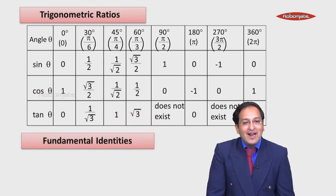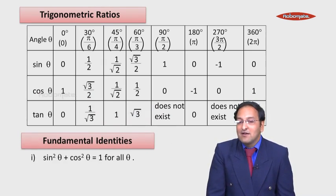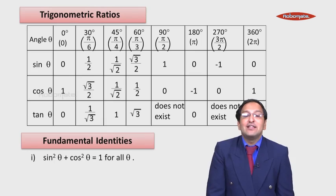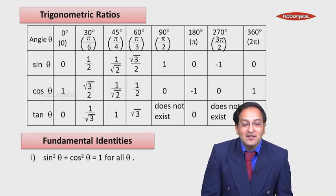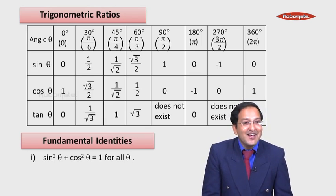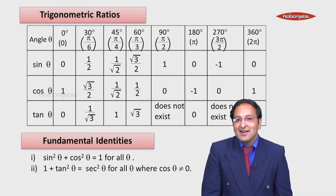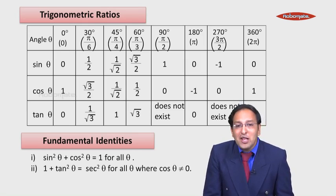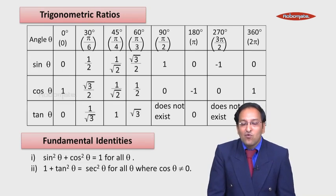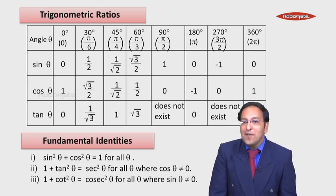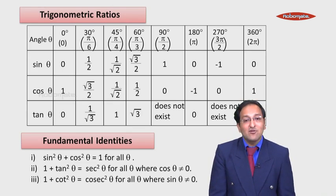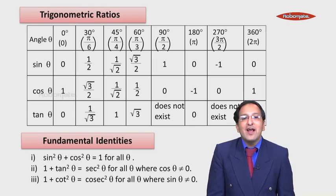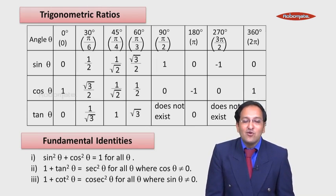Now, the fundamental identities. First: sin²θ + cos²θ = 1 for all θ — you have studied this in your 10th standard. Second: 1 + tan²θ = sec²θ for all θ, where cos θ must not equal 0. Third: 1 + cot²θ = cosec²θ for all θ, where sin θ is not equal to 0. These are the three basic fundamental identities.